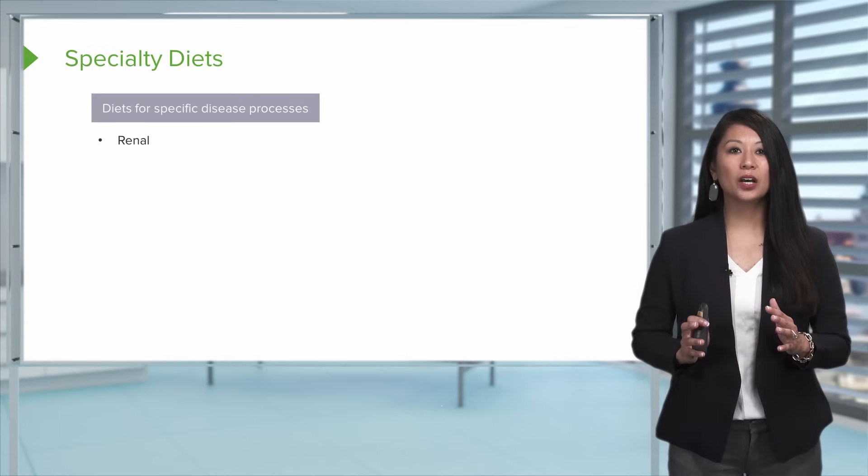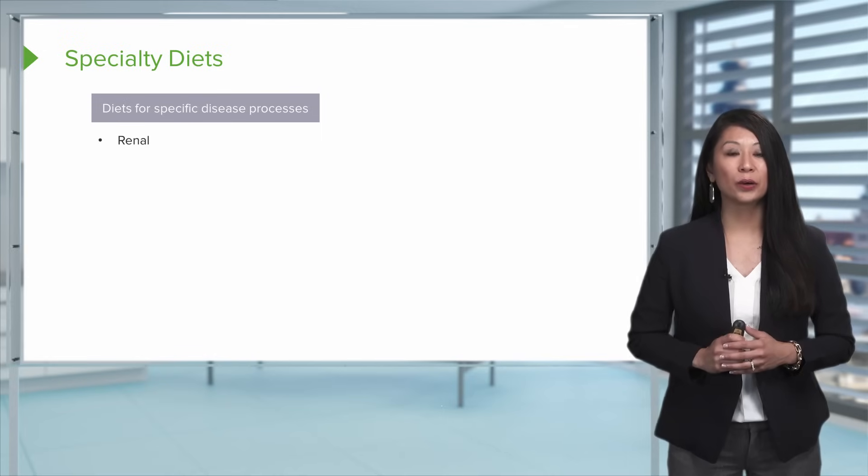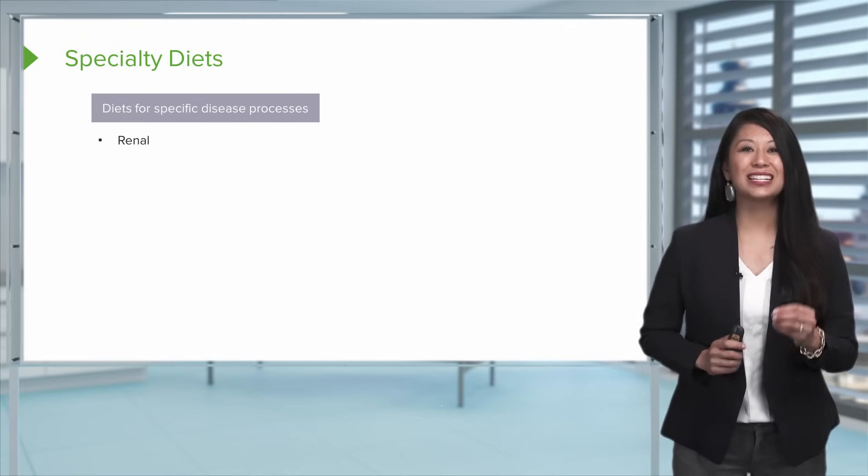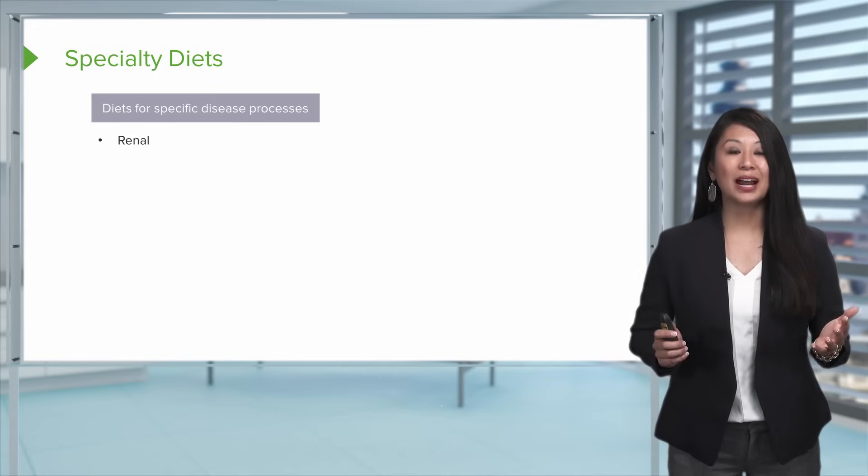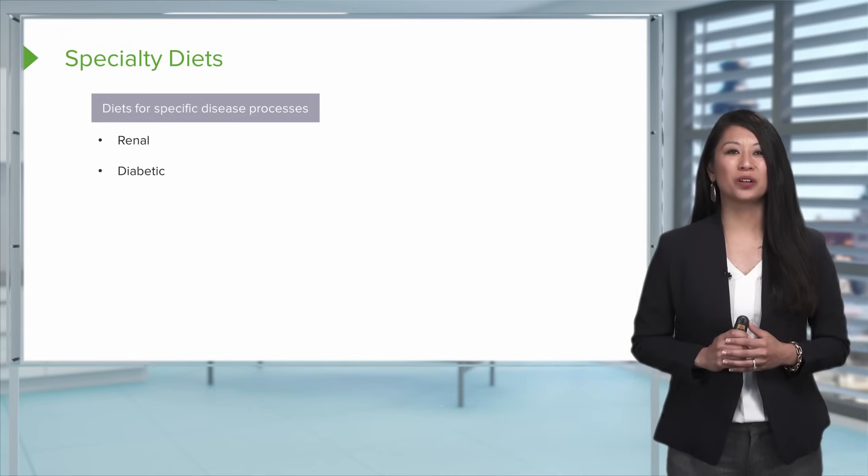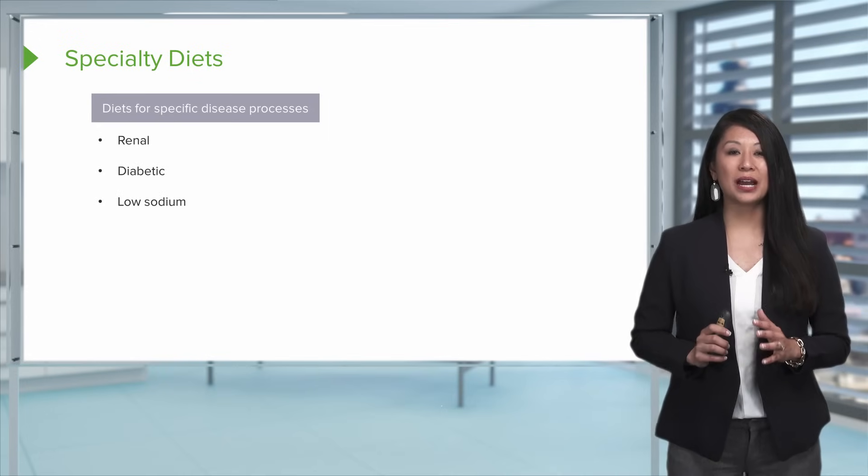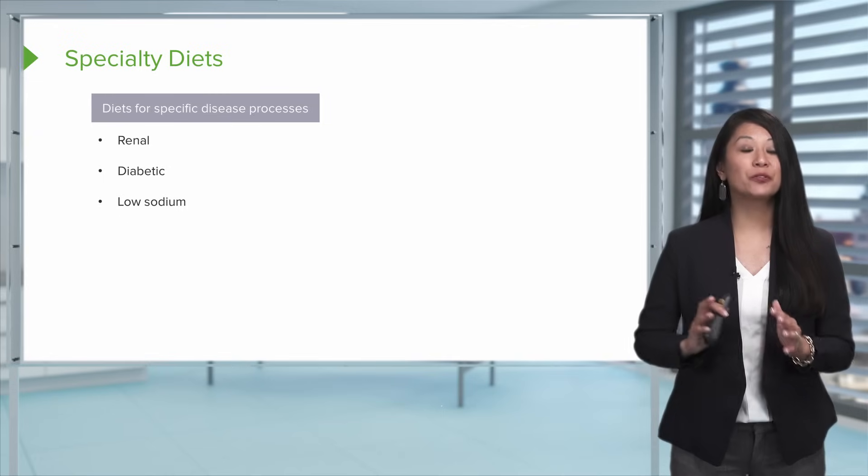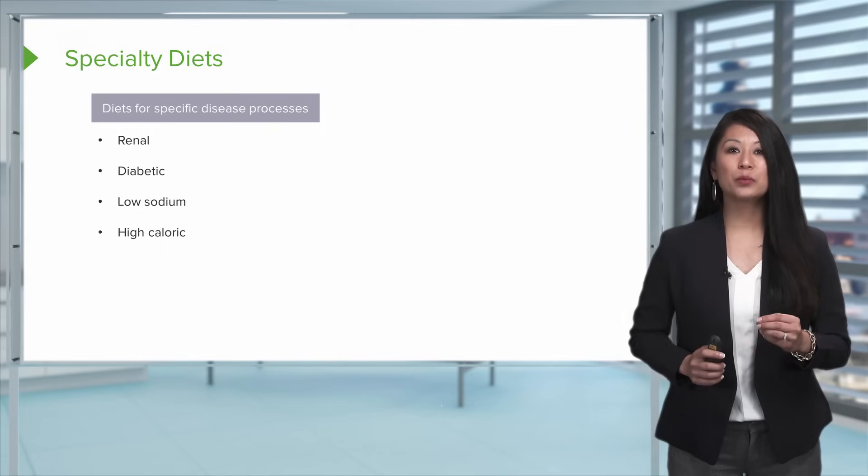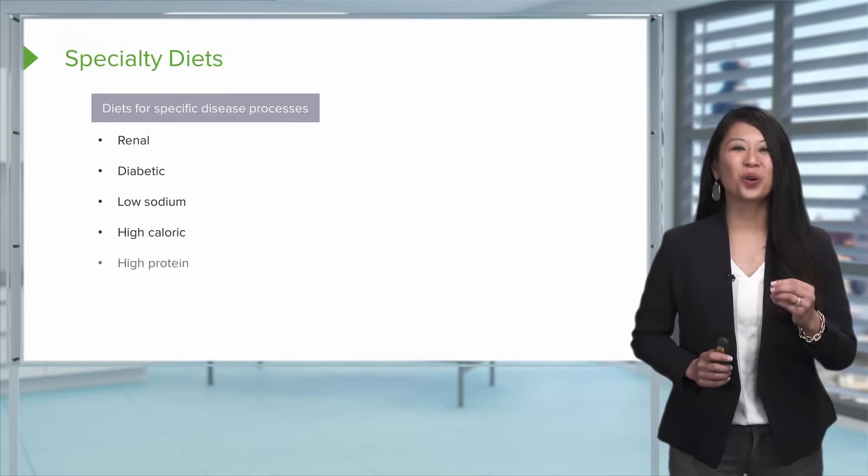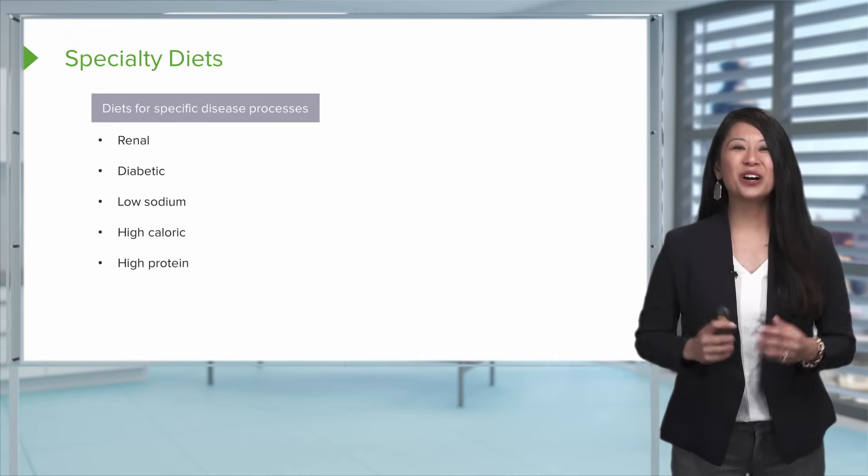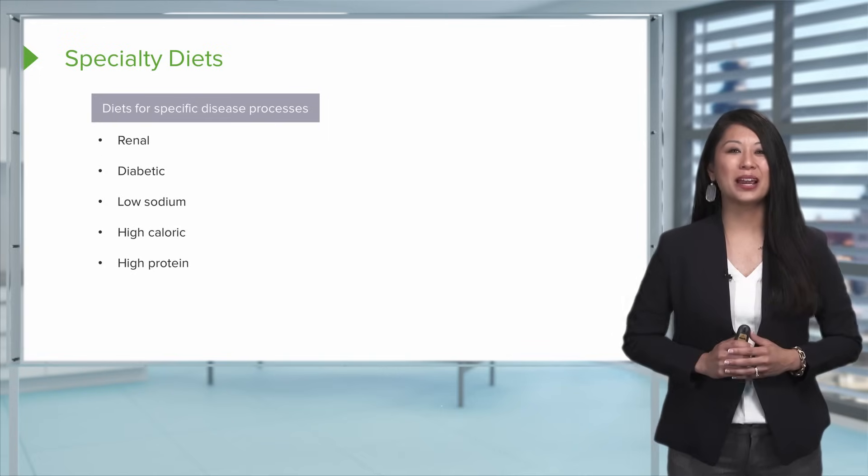Let's take a look at some specialized diets. There's special diets for specific disease processes. For example, there's a renal diet if a patient has kidney disease, a diabetic diet for diabetics, low-sodium diets that we use many times for our cardiac patients. If your patient's malnourished, sometimes we may need a high-calorie or high-protein diet. Also, if a patient has delayed wound healing, we may also use a high-calorie or high-protein diet.